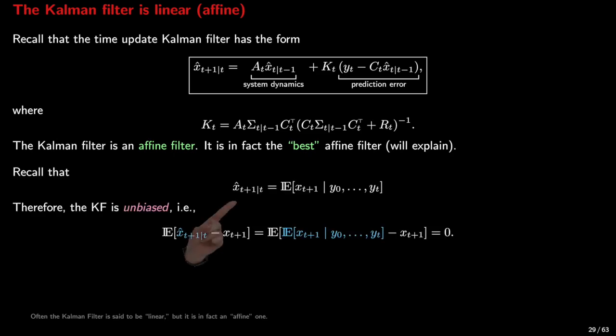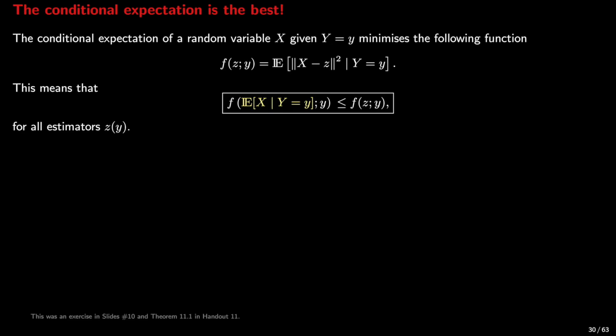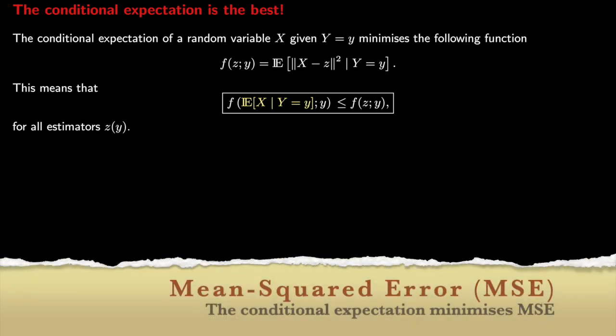Recall that the estimate x-hat_{t+1} at time t was previously taken to be the conditional expectation of x_{t+1}, given all outputs from y0 to y_t. This implies that the Kalman filter is unbiased. Moreover, the conditional expectation was previously shown to be the minimum variance estimator. We showed that the conditional expectation of x, given that y equals little y, minimizes this metric, which is known as the mean squared error.